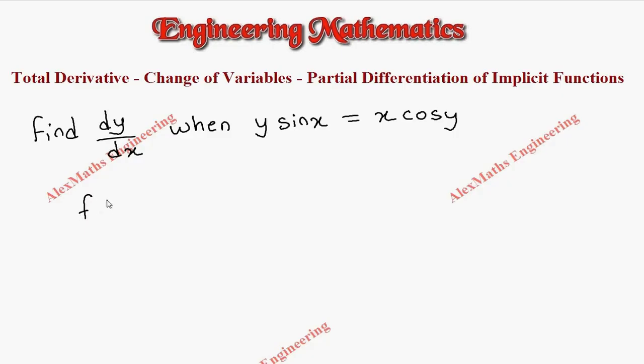So let's take f of x comma y as y sin x and this term we have to carry to the other side as minus x cos y.